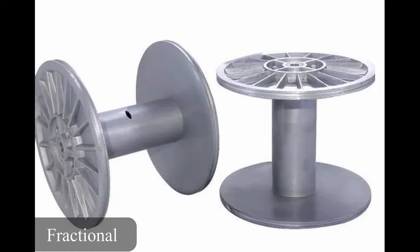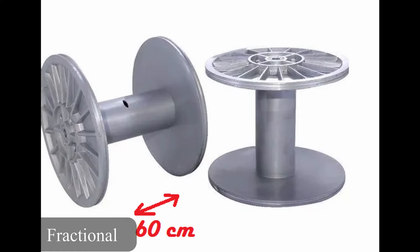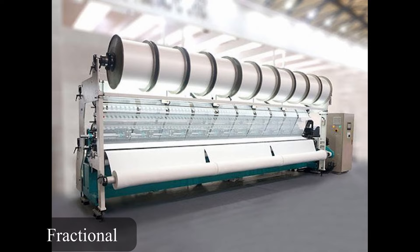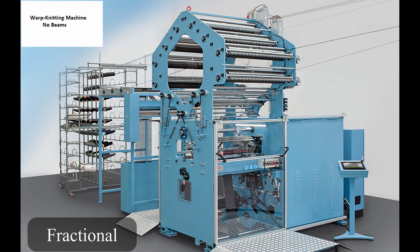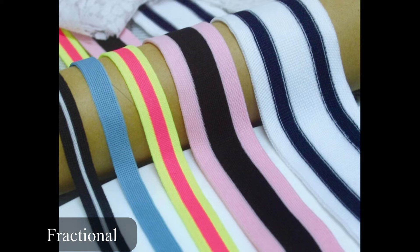Fractional beams for warp-knitted fabrics are small beams that can be 20 centimeters or 60 centimeters long and are hardly ever sized. In fractional warping, the preparation of the warp can be performed from the creel and the warps are taken directly to the machine to create the fabric, skipping the beam. Tapes are made like this, for instance.